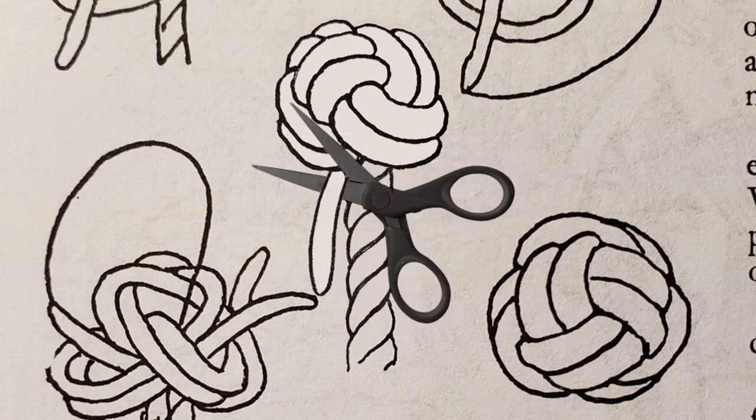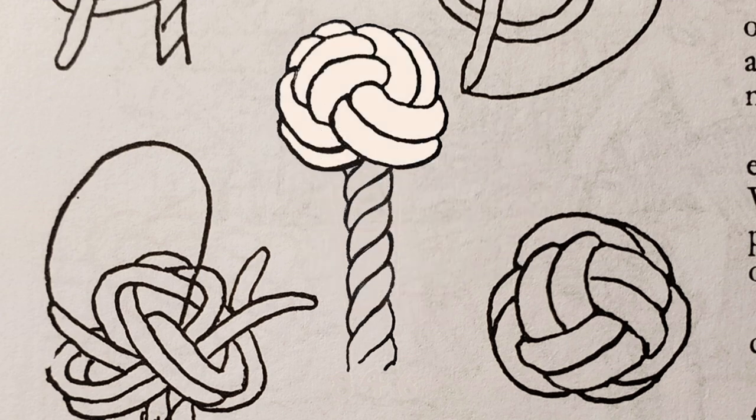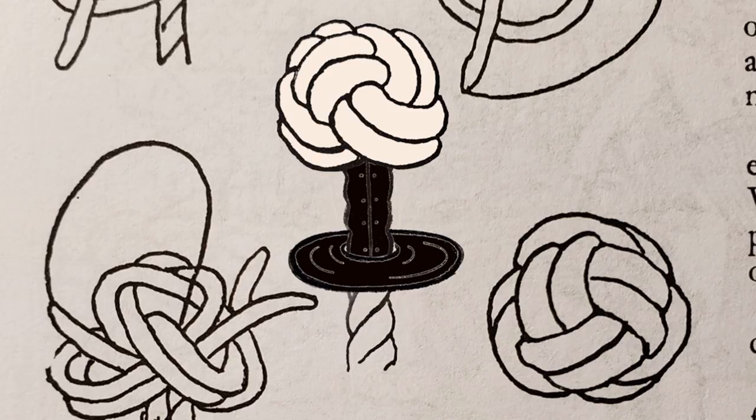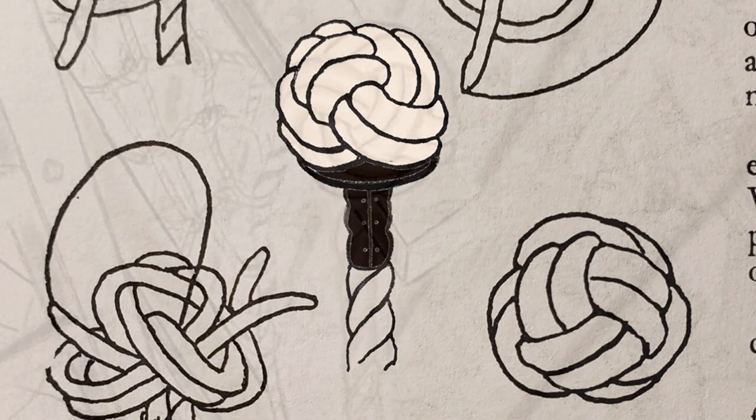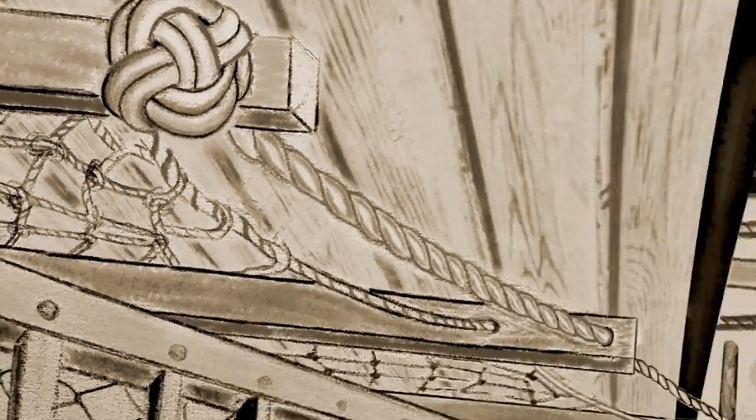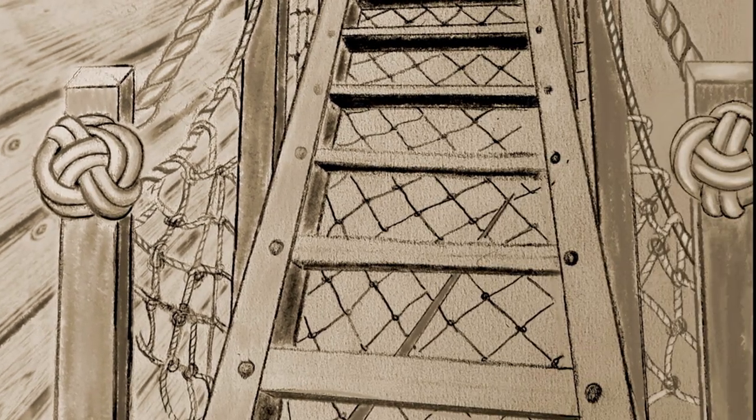The knot itself was sometimes painted, and adding a washer and sleeve reduced abrasion. This knot was used at the ends of a manrope, which were located beside ladders and stairs found on old ships.